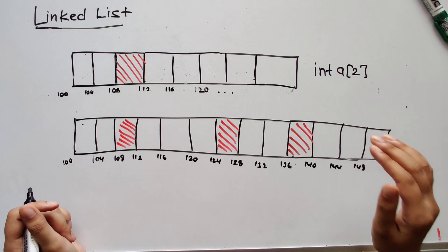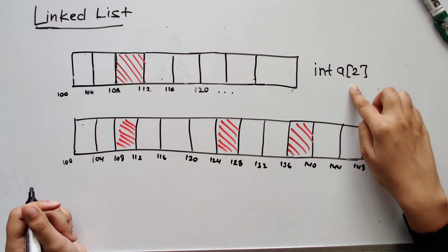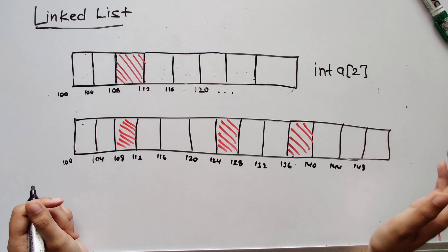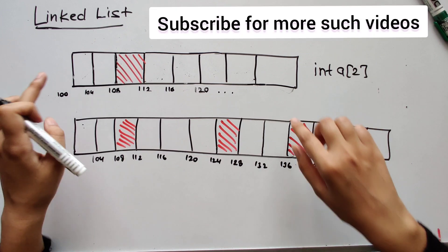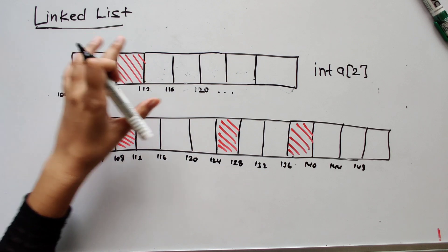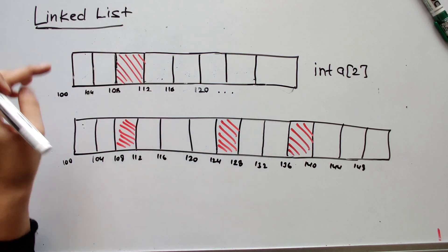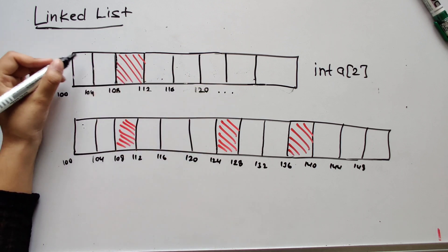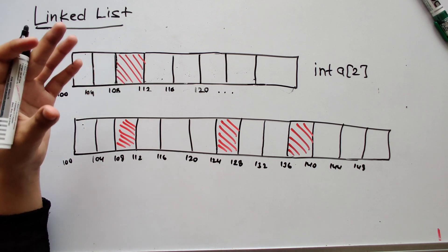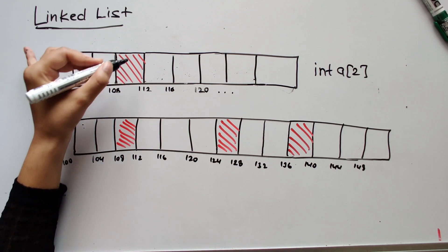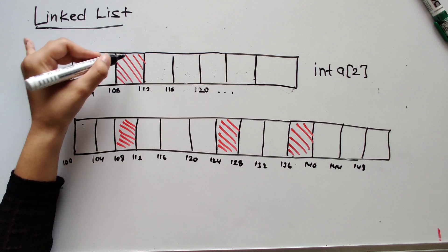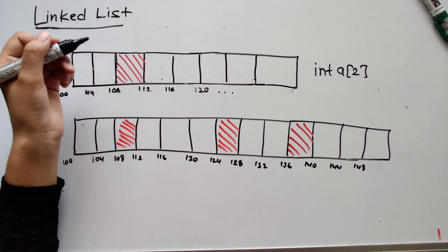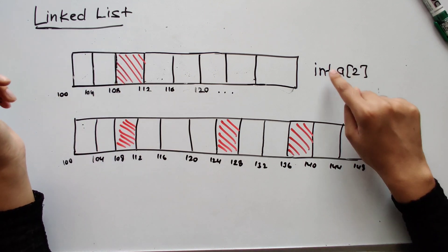In order to understand linked lists, we need to understand some fundamentals of arrays. An array is of fixed size and stored in contiguous memory locations. Here I've drawn how your memory looks, where every block is 4 bytes — this is address 100, this is 104, and so on. An integer requires 4 bytes. Whatever I've marked in red, that block of memory is taken — it's not free, maybe some other integer has taken that space.